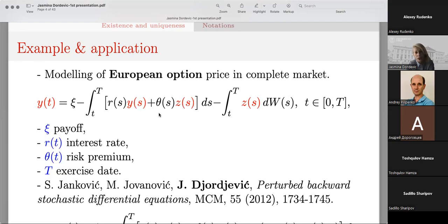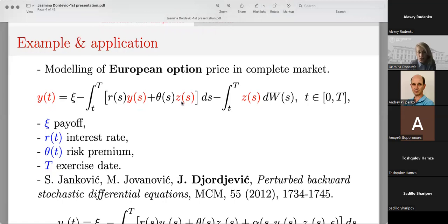Here R is the interest rate and theta is the risk premium. By this equation, the state process Y of t is the arbitrage price of the European option, and Z — the control process — is the hedging of this option. Again, it is a kind of reachability problem where this hedging enables the arbitrage price to reach the payoff price at the final moment T.